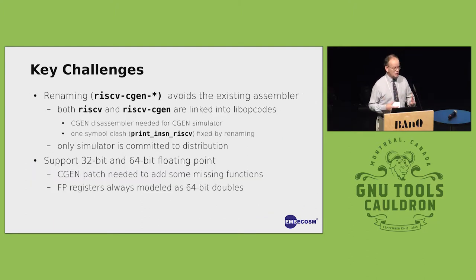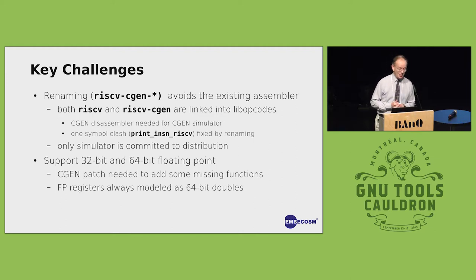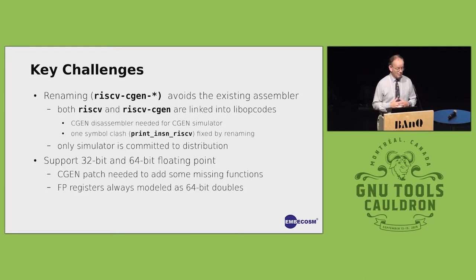What were the key challenges? CGen is not new technology — it's been around for at least two decades. One challenge was we didn't want to replace the existing assembler and disassembler because it works, and if you replace something that works, something will stop working. So though everything has the triple RISC-V-something at present, this work has the triple RISC-V-CGen-something, which means we don't trample on the existing assembler. To do with the way the simulator works, we still need them both in libopcodes, and it turns out there's only one symbol clash which we can get away with by renaming.